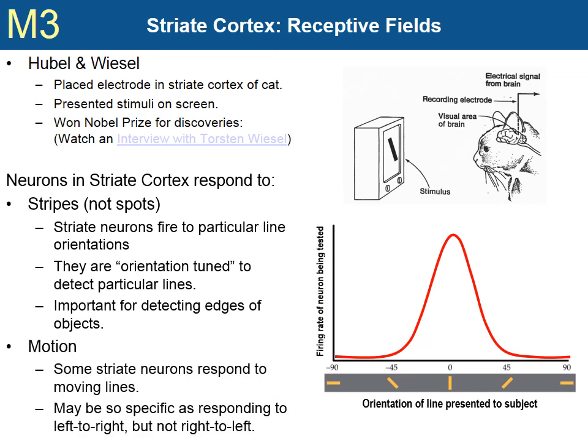Additionally, some striate neurons responded maximally to lines of a particular orientation that were also moving in a particular direction.